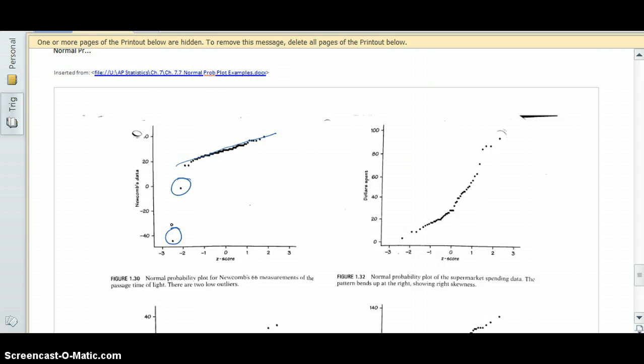The next normal probability plot shows supermarket spending data. And if we were to follow the line of best fit here, we can see a definite curved pattern. It bends up at the right showing right skewness.